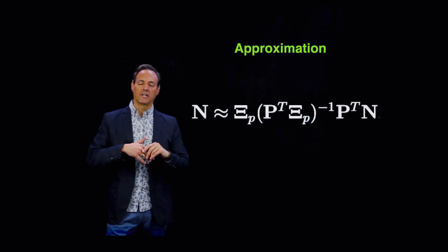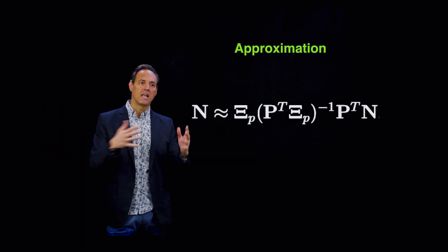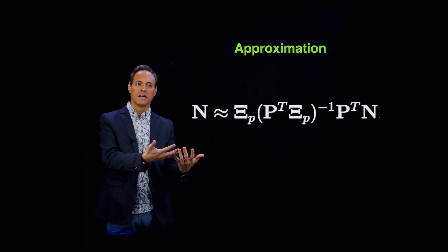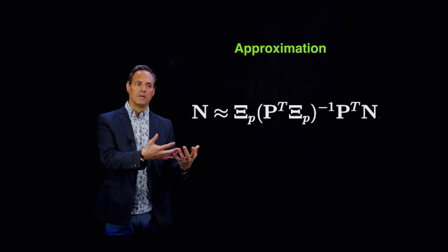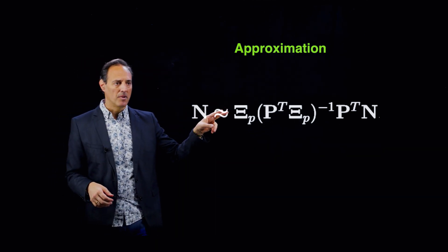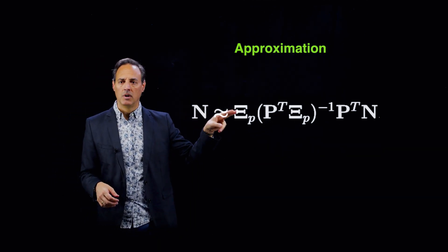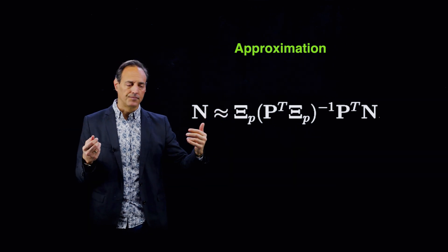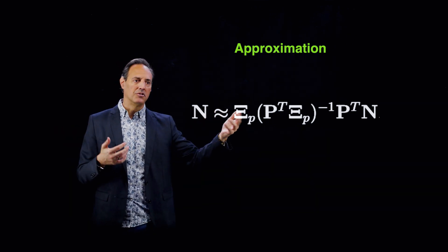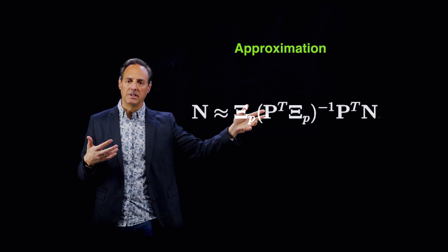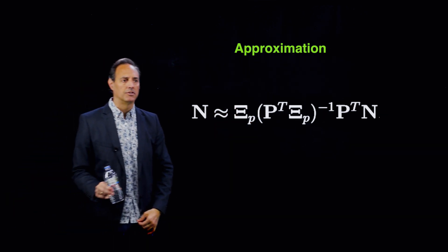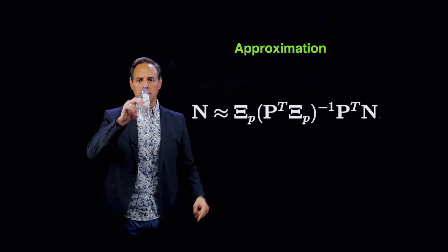Before, we were always projecting into the SVD modes of the whole system. Now you're projecting onto the SVD modes of the nonlinearity itself. You construct the measurement matrix to optimally — this is a greedy search algorithm — construct that P matrix. The big deal of all these architectures is constructing that P matrix.